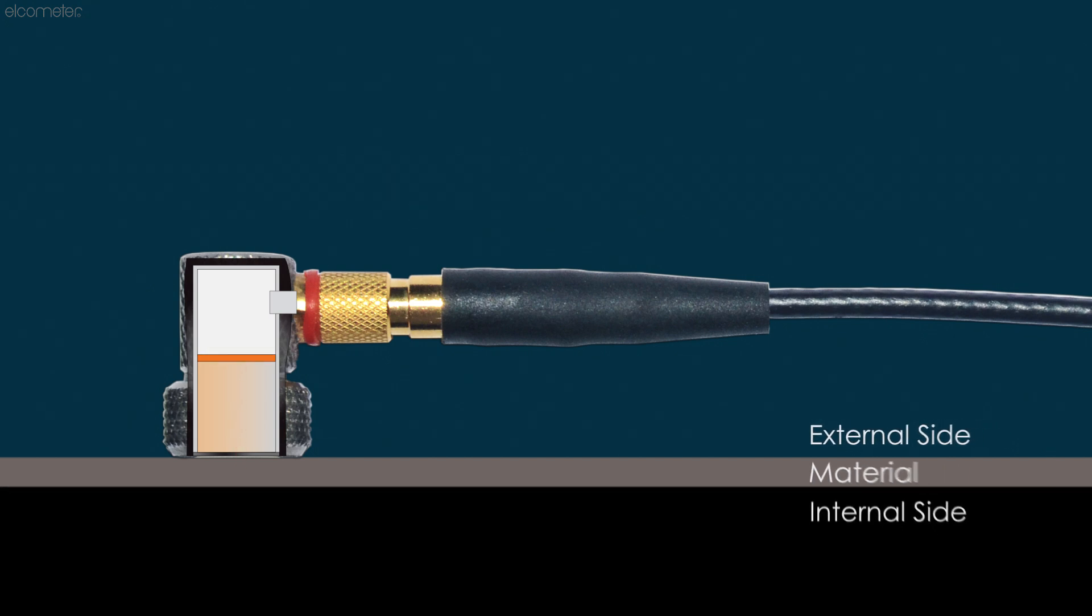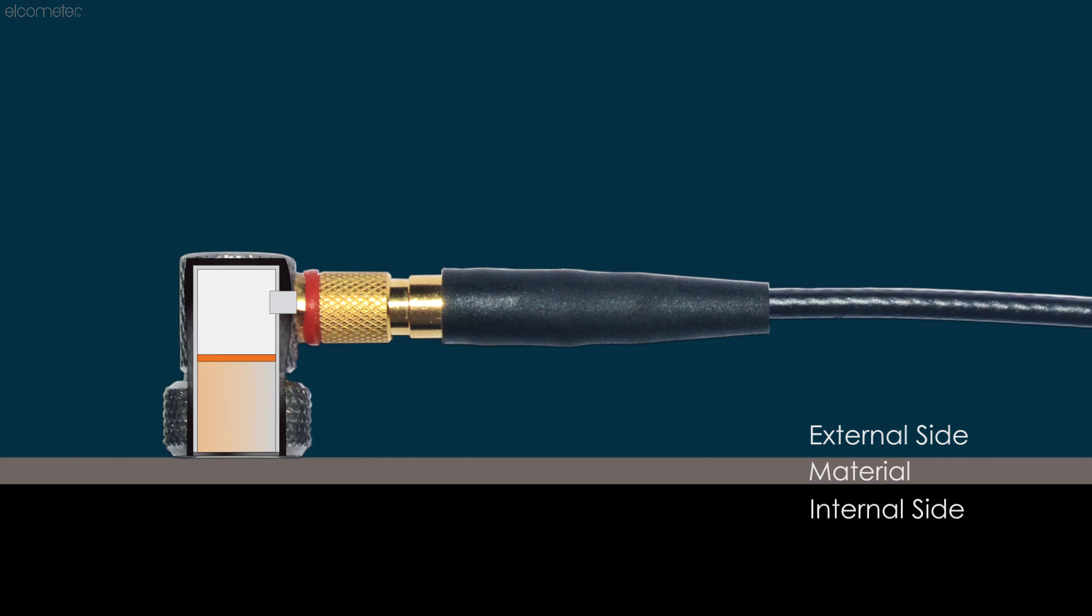However, measuring thin materials means that the ultrasonic signal will return to the transducer incredibly quickly, and as a result there's not always enough time between the pulse leaving the element and the echo returning. This is why, when using an Elcometer PTG...